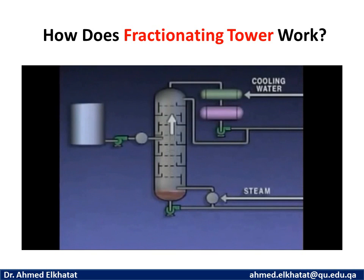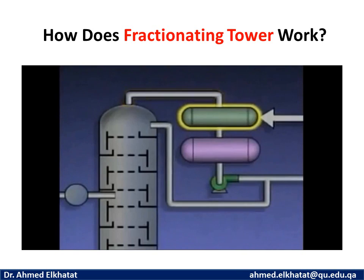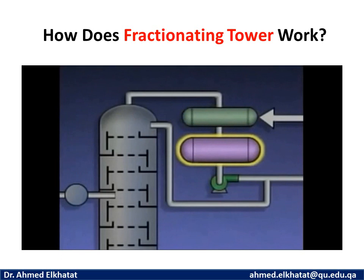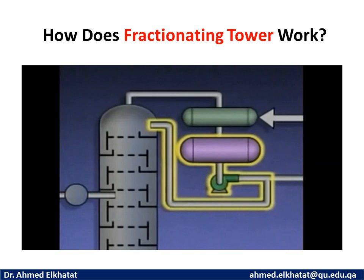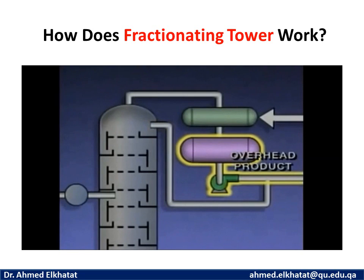The vapors that rise up in the tower are routed to a condenser. The purpose of the condenser is to cool and condense the vapors into liquid. From the condenser, the liquid flows into a receiver or accumulator, which provides a reservoir for the liquid. Part of the liquid from the receiver is pumped back into the top of the tower, and part of it is drawn off as the tower's overhead product.